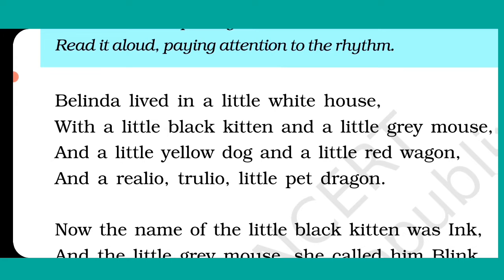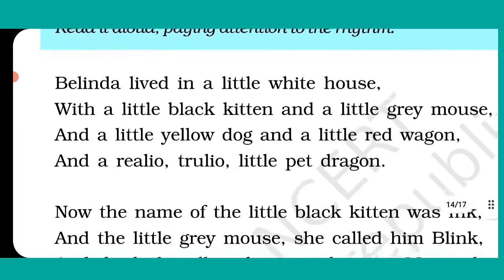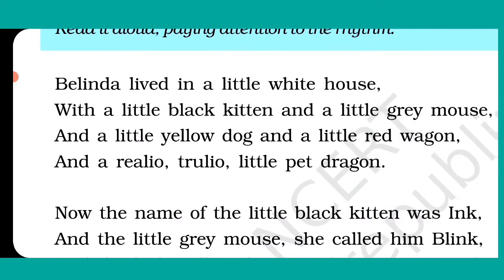In the first stanza, the poet wants to say that once there was a little girl named Valinda. She lived in a little white house with some creatures who were her pets. They were a black kitten, a grey mouse, a yellow dog, a little red wagon, and a creature that the poet says was really and truly a dragon.